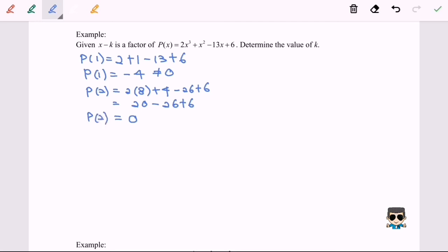Meaning that x minus 2, from here we can say that x minus 2 is a factor of P(x). Now we can compare x minus k is a factor, so from here k will be equal to 2.